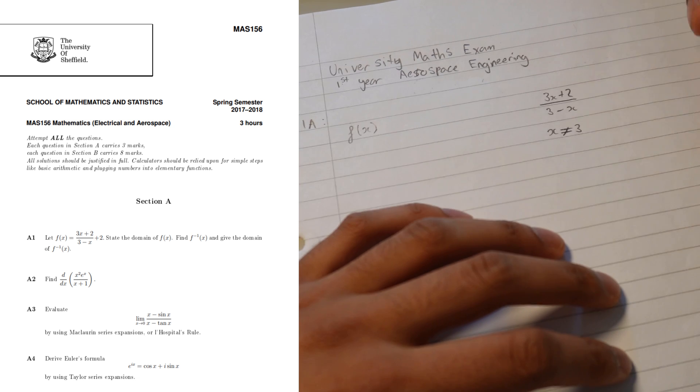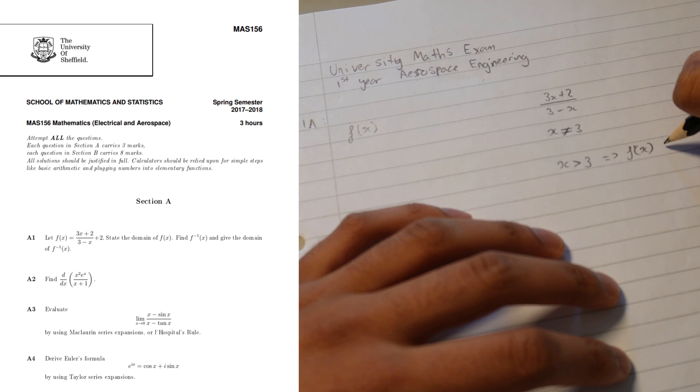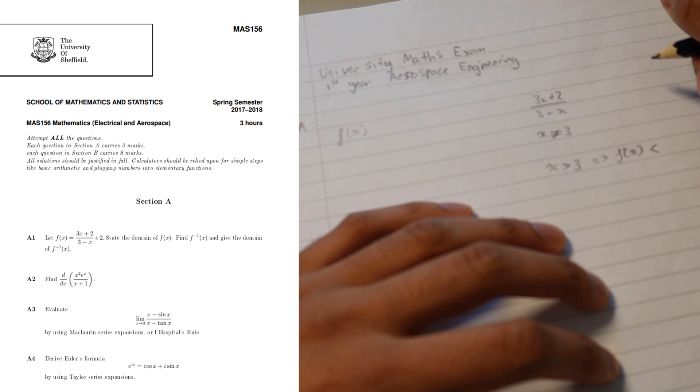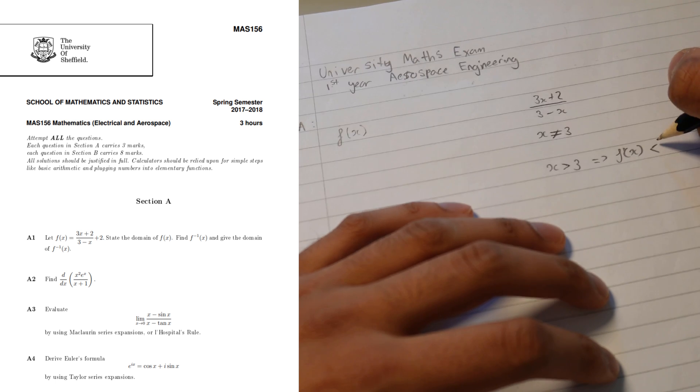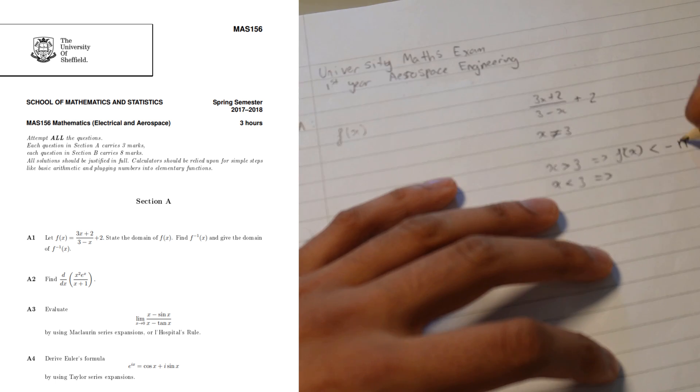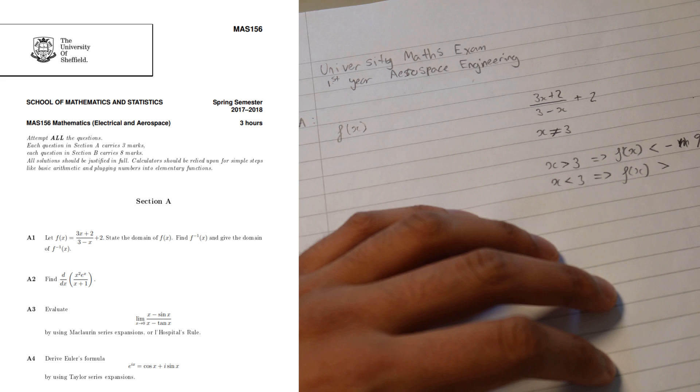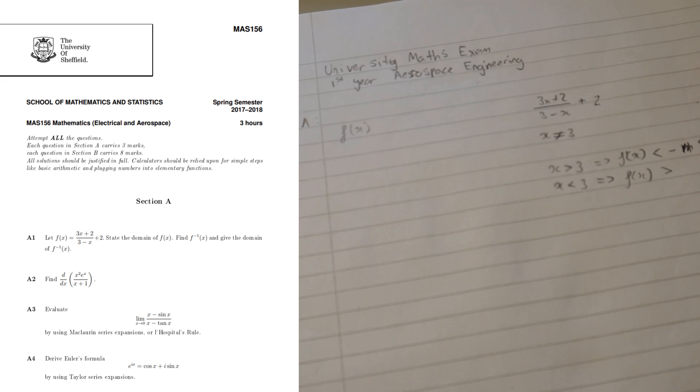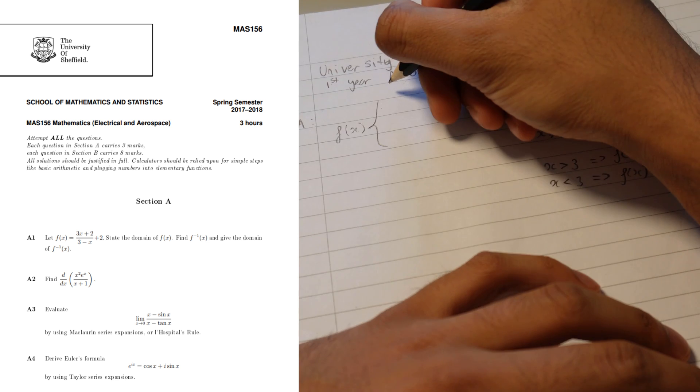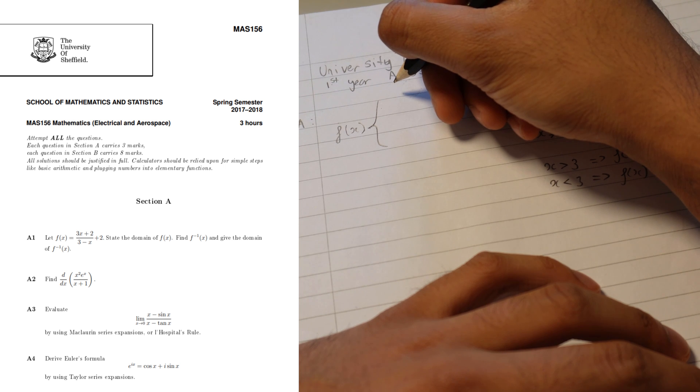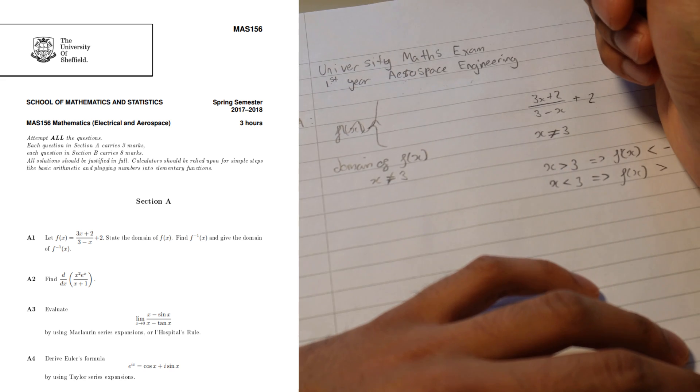For this question I kind of forgot what domain is initially and then I realized that it's basically supposed to be what values of x is valid for this function. One of the other things I forgot was how you actually write the notation for what a domain of a function is. The reason why x can't be 3 is because if x is 3, then you'd have 3 minus 3 at the bottom of a fraction, which makes it something over zero and that's undefined, so that's why it's an illegal thing in maths.